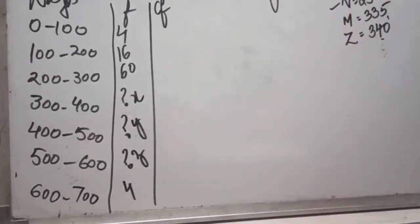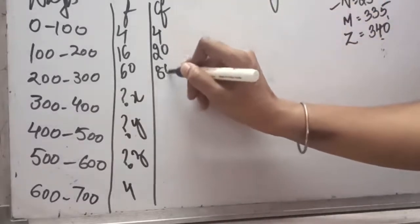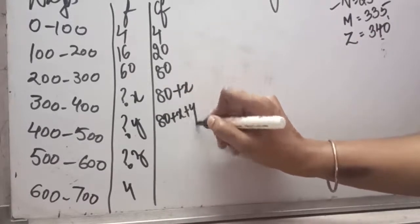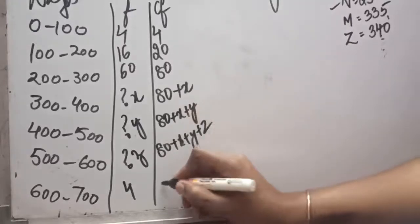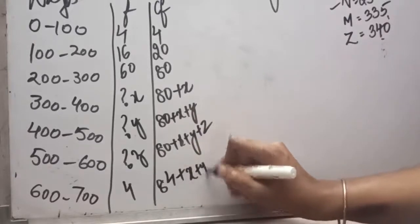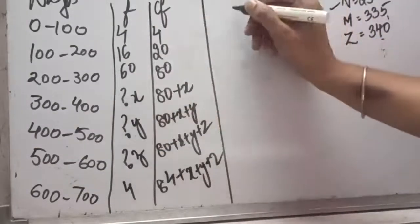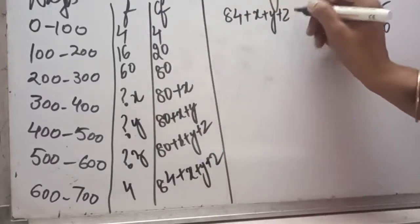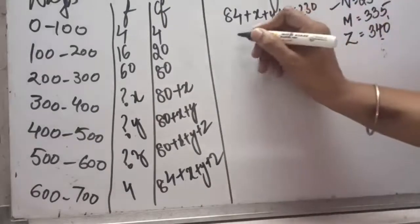From the first given information, let us prepare the cumulative frequency (CF), because for the purpose of median we require CF. The CF will be: 80, 80 plus x, 80 plus x plus y, then plus z, and 84 plus x plus y plus z. So the total of frequency is 84 plus x plus y plus z equals 230.